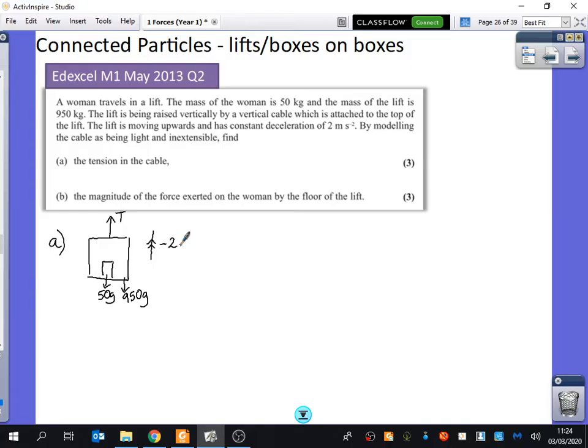So this first part should be no different at all. We're just going to resolve upwards using F equals ma. The resultant force is just going to be the force that's going up minus the forces that are going down. So that's T minus 50g minus 950g. The mass is the combined mass which is 1000 and the acceleration is minus two.